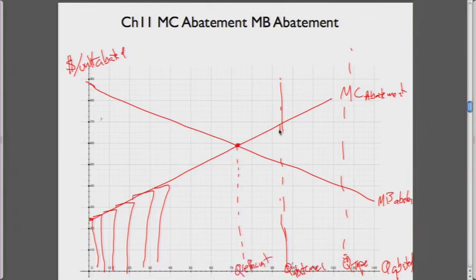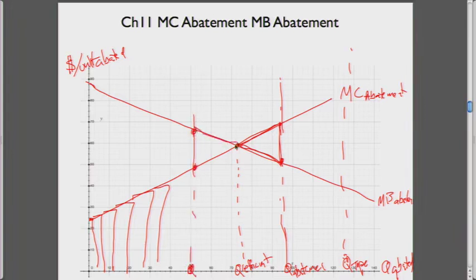If the regulator asks for too much abatement, then we have a loss triangle here. If the regulator sets the level too low, then we may have a loss triangle here from not being at the efficient point.